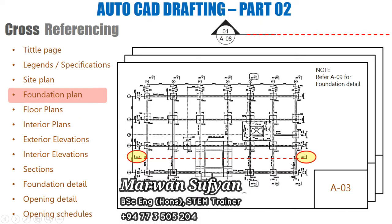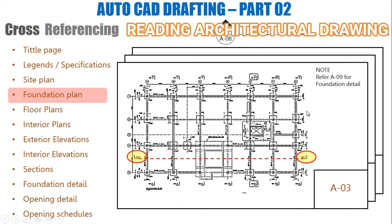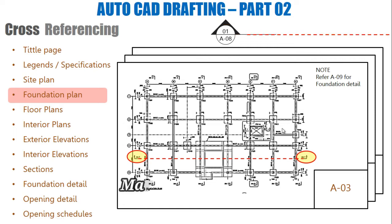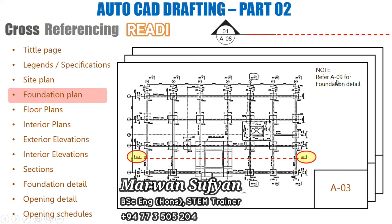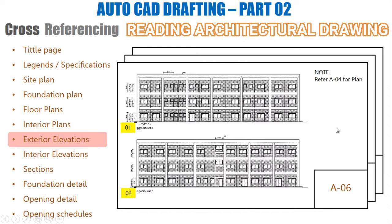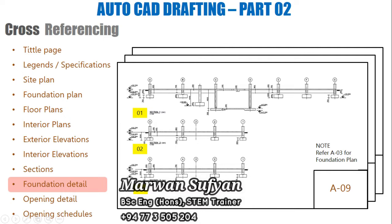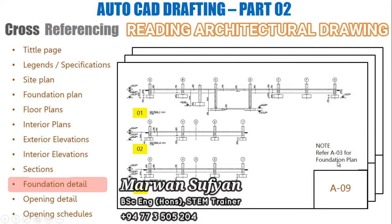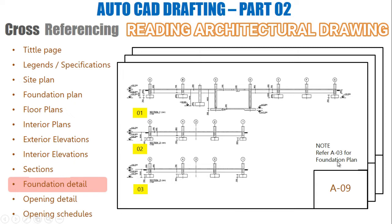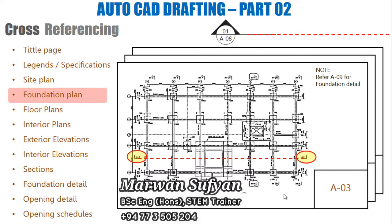Going back to the foundation plan, one thing to note is there's a note that says 'refer A09 for foundation detail.' So this is the foundation plan on sheet A03, and the foundation detail can be found in A09. Jumping to A09, we can find the foundation details, and in that drawing there's a note that says 'refer A03 for foundation plan.' This is called cross-referencing.